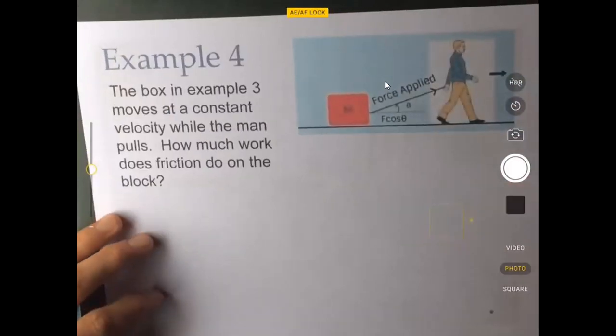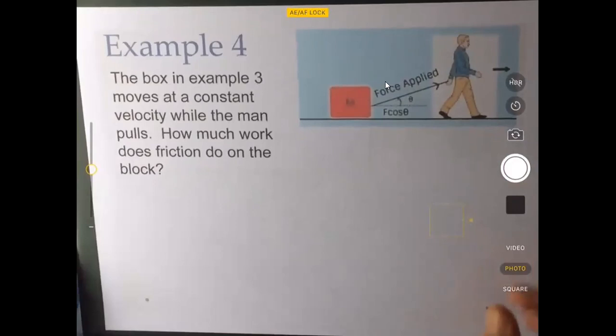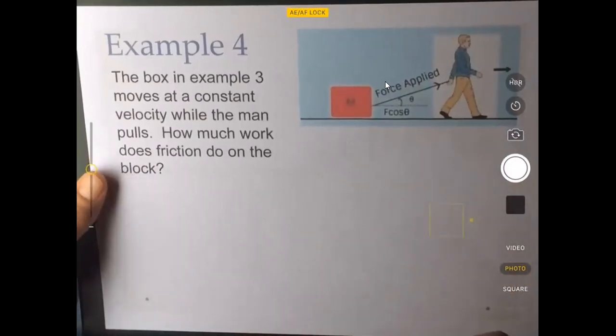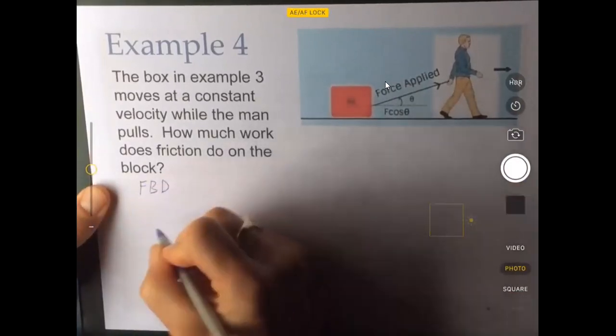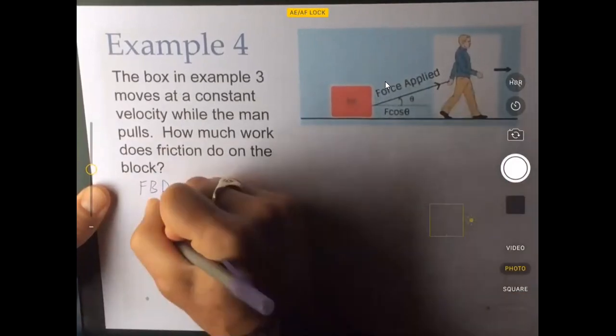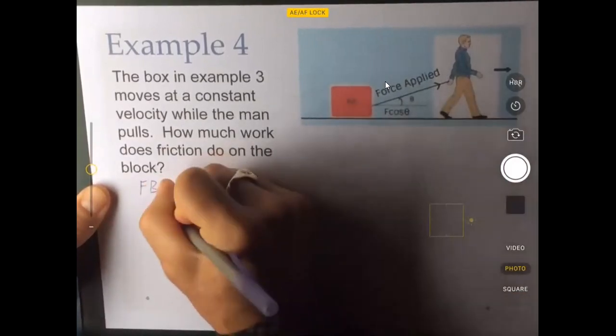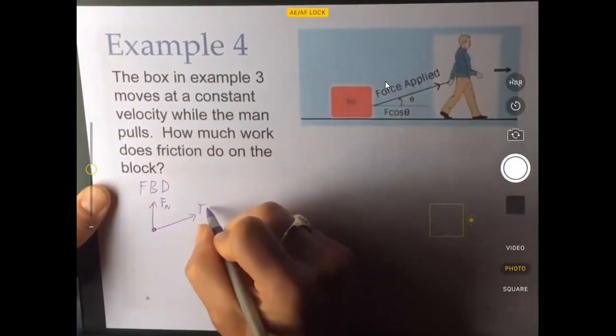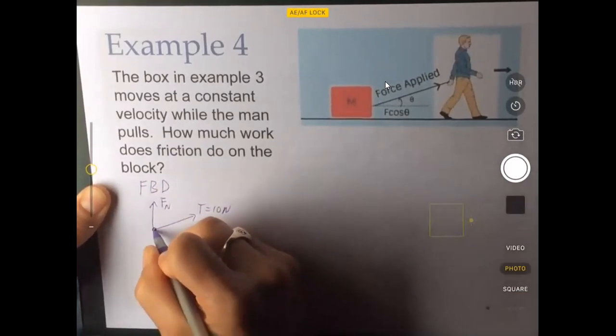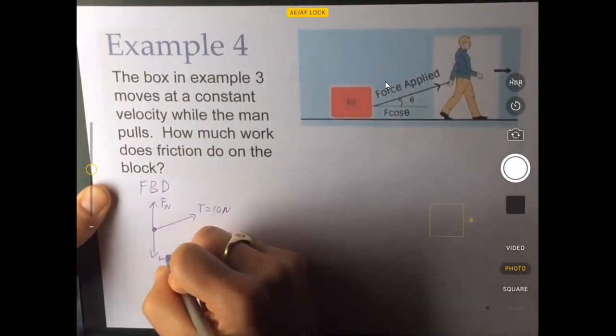Let's look at example four. The box in example three moves at a constant velocity while the man pulls. How much work does the friction do on the block? So in this particular instance, let's draw a free body diagram first. There is a normal force. There's the man pulling. There is the weight of the block.